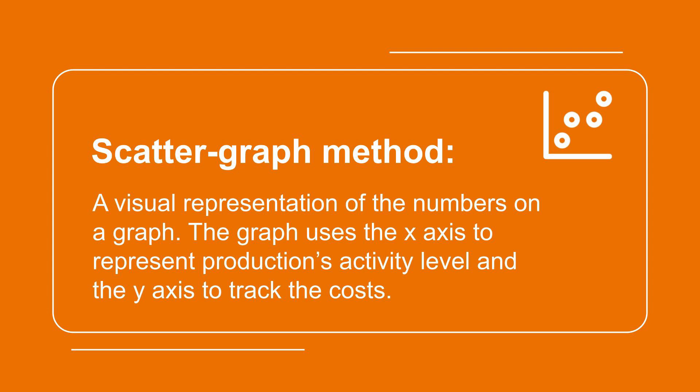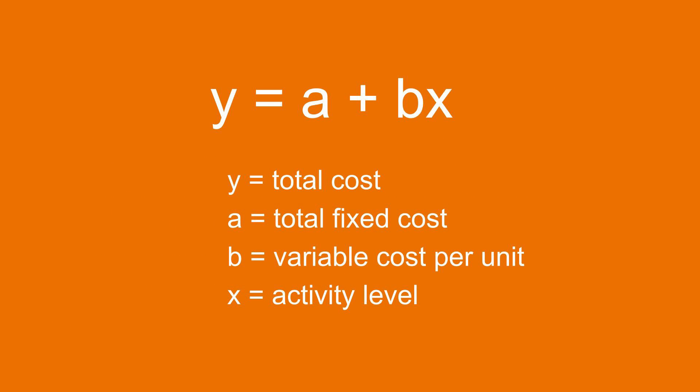Like the high-low method of mixed cost analysis, scatter graph method follows a formula, which is y equals a plus bx, where y is the total cost, a is the total fixed cost, b equals the variable cost per unit, and x is the activity level.